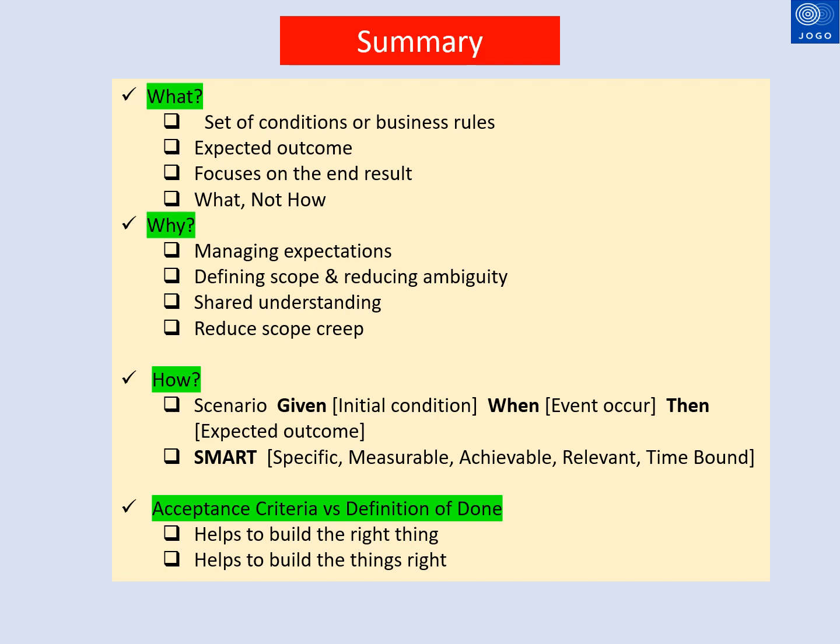How to write acceptance criteria: Follow the scenario, given, when, then formula. It should also be SMART — specific, measurable, achievable, relevant, and time-bound. Key differences between acceptance criteria and definition of done: acceptance criteria helps to build the right thing, while definition of done focuses on building things right.